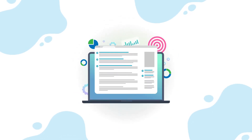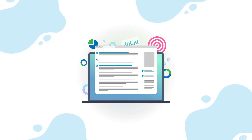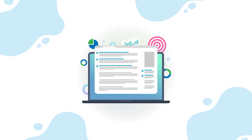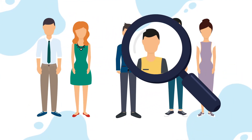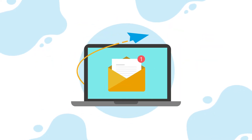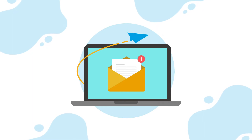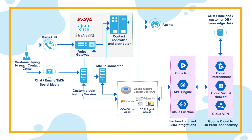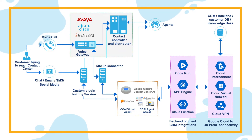In cases where fallback or agent transfer is required, the custom connector hands over the interaction to the contact center solution with the full context of the conversation. The contact center solution identifies and connects the right agent to the customer. The custom connector sends the complete chat transcript between bot and customer to the agent as a screen pop, helping the agent avoid repeated questions and pick up from where the bot left off.